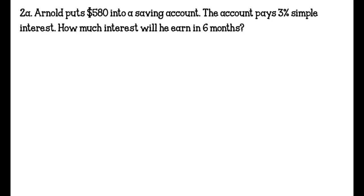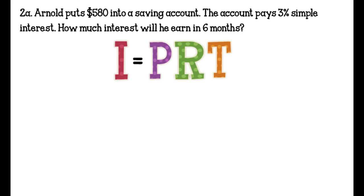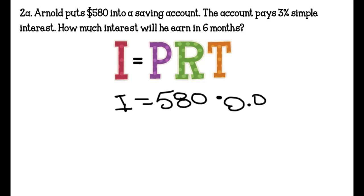Problem 2A: Arnold puts $580 into a savings account. The account pays 3% simple interest. How much interest will he earn in 6 months? We are still trying to find interest, so we bring down our variable I. Our principal is 580 again, and our rate is still 0.03.